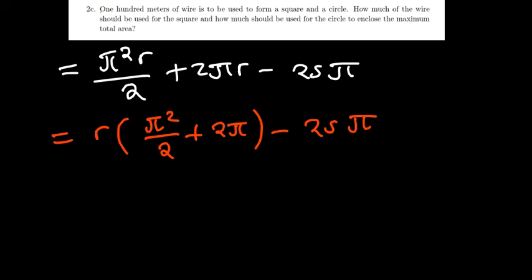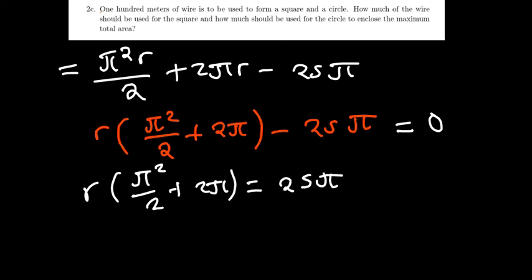Factor out the r, you remain with π²/2 and then 2π minus 25π. So the only value I have here is r. Everything else is like π, π, π, so it's a constant. Now how do we go about it from this point? We're trying to determine the points where this is going to be equal to 0. So we have r(π²/2 + 2π) equal to 25π. You're making r the subject, so r = 25π/(π²/2 + 2π). So you've actually made r the subject and you found a point where you expect this expression to be equal to 0.